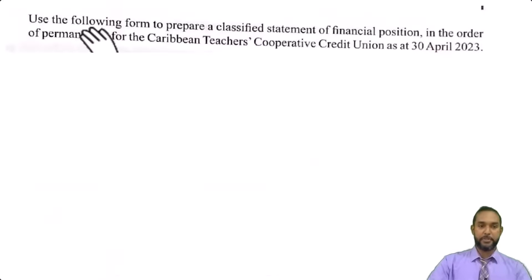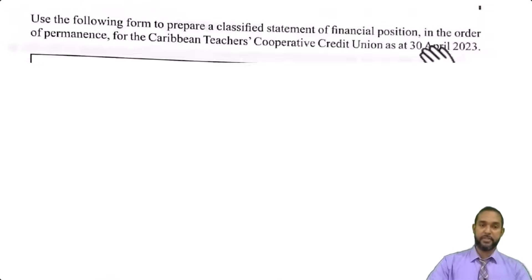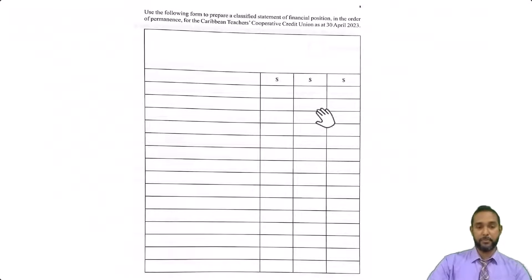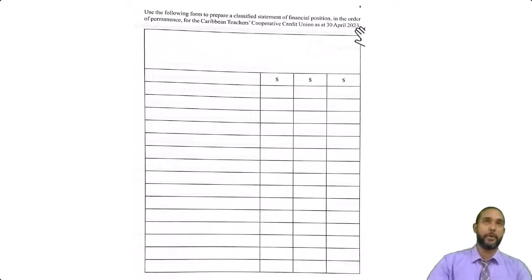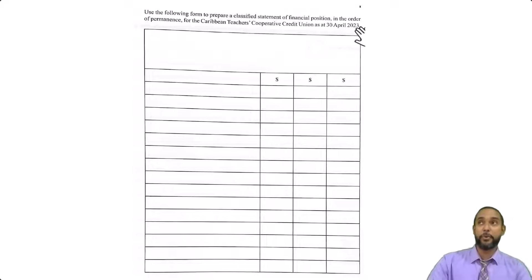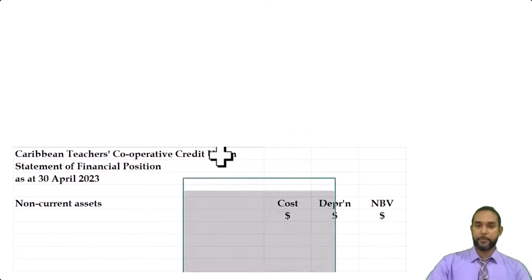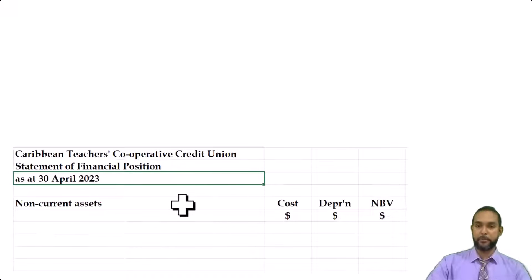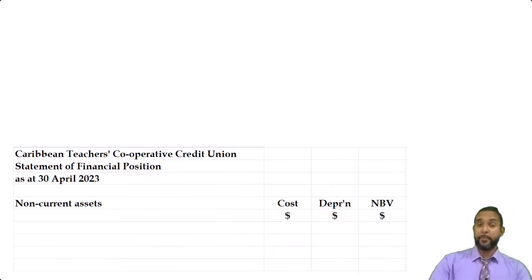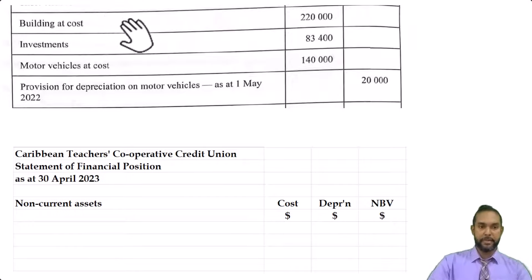Let's take a look at Part C. They asked to use the following form to prepare a classified statement of financial position in the order of permanence for this entity — that's for 30 marks. Some people like a three-column format, some like two. If they give you three columns and you only use two or one, just use what you're accustomed to. And if they only give you two columns and you like to use three, draw in your column. So as you can see, I head up: name of the entity, name of the statement, period which applies. We're starting with non-current assets — order of permanence means most permanent assets first. So buildings, investments, motor vehicles — those are the three non-current assets. Buildings: no depreciation. Investments: no depreciation.